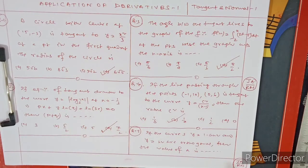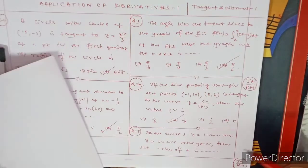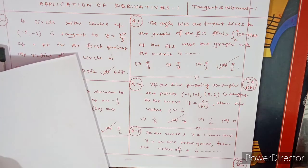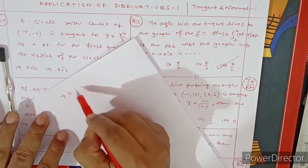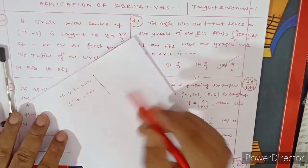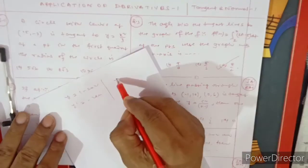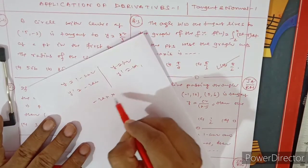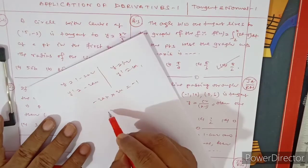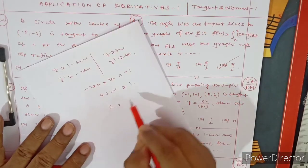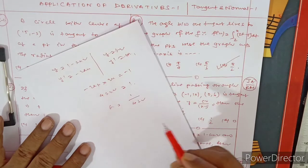So c² = 1/4. Now Question 5: The curves y = 1 − ex² and y = x^e are orthogonal. Orthogonal means product of their slopes equals −1. dy/dx for y = 1 − ex² is −2ex, and dy/dx for y = x^e is 2x (assuming e is a constant parameter). So (−2ex)(2x) = −1, giving 4ex² = 1, hence e = 1/(4x²).